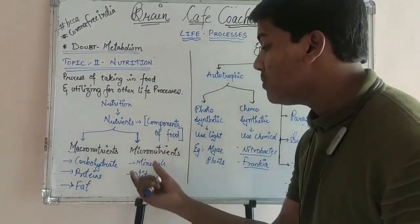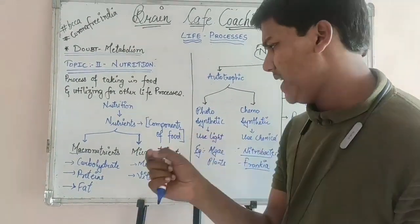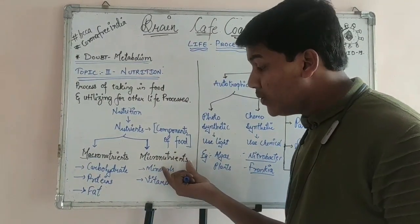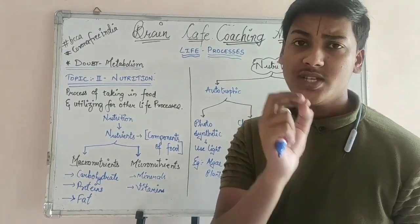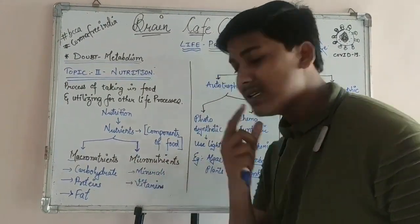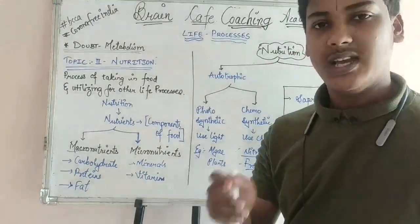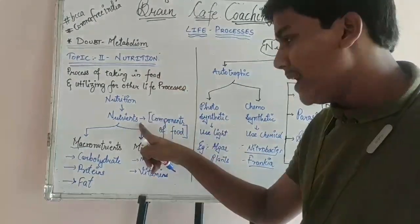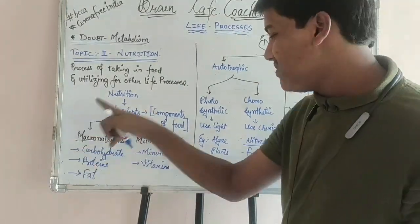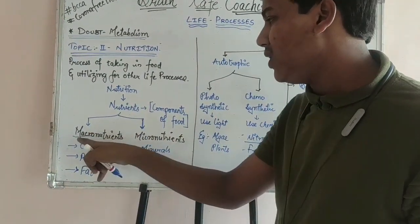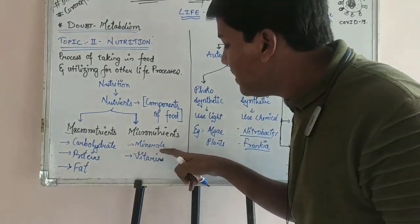Micronutrients are nutrients which are required by your body in very small amounts, but your body still needs them. For example, minerals and vitamins. So to recap: macronutrients are required in large amounts — carbohydrates, proteins, and fats; micronutrients are required in small amounts — minerals and vitamins.